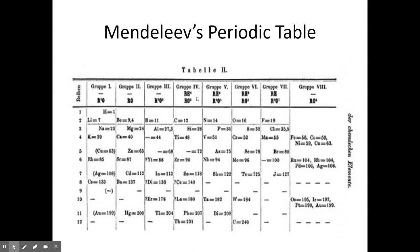His original table had about eight groups arranged in a table fashion with periods, where elements with similar properties would fall in the same period. We know now that some of these elements don't go exactly where he placed them, but there are good explanations for why that was.